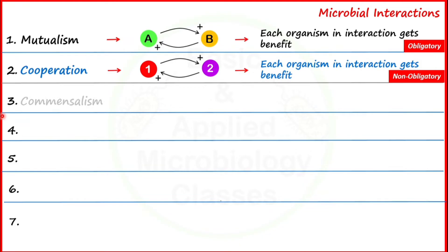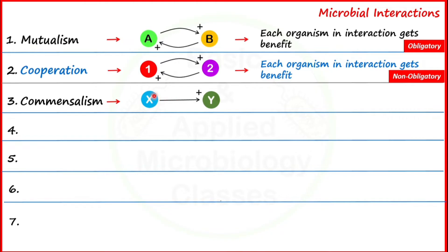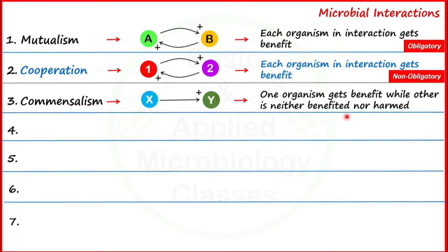The third type of interaction is commensalism. Here we take two different populations labeled X and Y. X gives some kind of benefit to Y, but Y does not give any benefit back to X — it neither harms it nor benefits it. So in commensalism, one organism gets benefit while the other is neither benefited nor harmed. We can also note that commensalism is a unidirectional interaction, compared to mutualism and cooperation which are bidirectional.